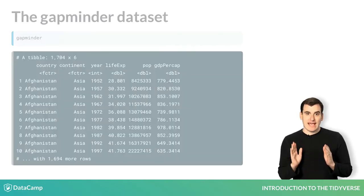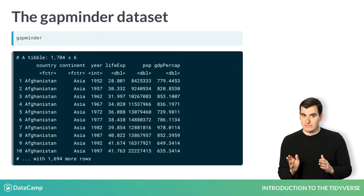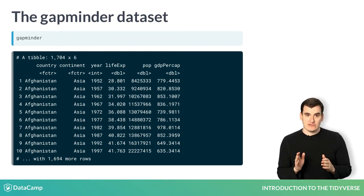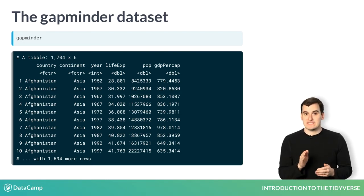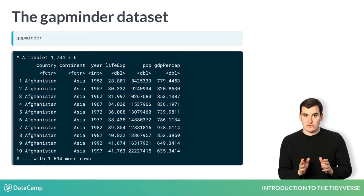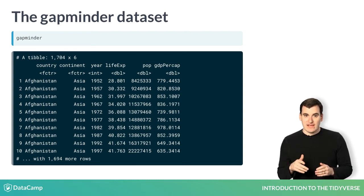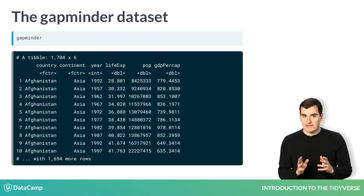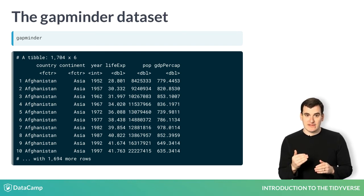You type Gapminder to display the contents of the Gapminder object, which is structured as a data frame. A data frame keeps rectangular data in rows and columns, similar to a spreadsheet or a table in a SQL database. Most data analyses in R, and everything you'll do in this course, are centered around data frames. As described in the first line of the output, this is a special type of data frame called a tibble, though for now you don't have to worry about the difference. R displays the first ten rows so that you can get a glimpse of it, and you can see a short description in the first line.